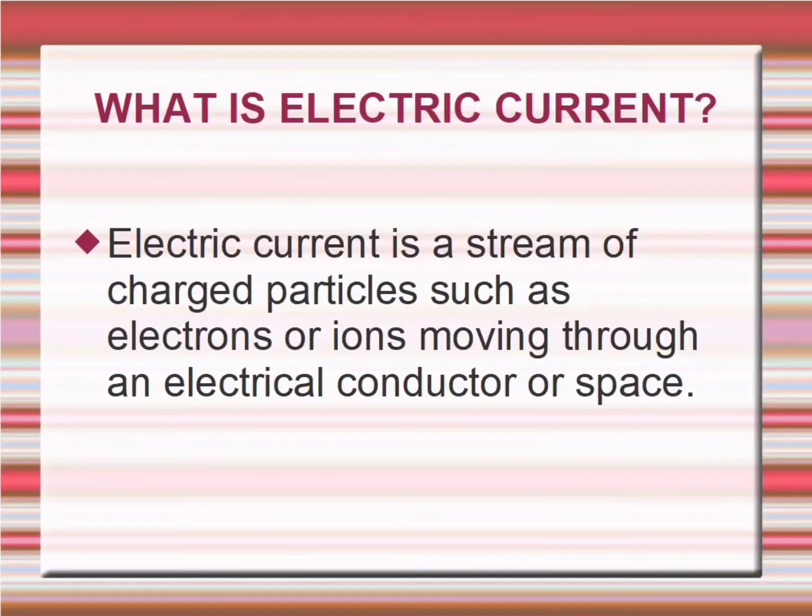What is electric current? Electric current is defined as a stream of charged particles such as electrons or ions moving through an electrical conductor or space.